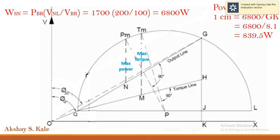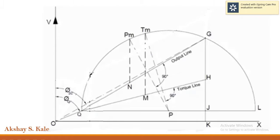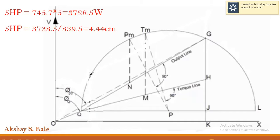Now it's time to calculate the power scale. We have already found WSN as 6800 Watts. First, measure the length of line GK, which comes out to be 8.1 cm. After dividing WSN by the length of GK, we get the power scale as 1 cm equals 839.5 Watts. Our induction motor in the example is 5 HP. Converting: 1 HP = 745.7 Watts, so 5 HP = 3728.5 Watts. Dividing 3728.5 by 839.5, we get 4.44 cm.